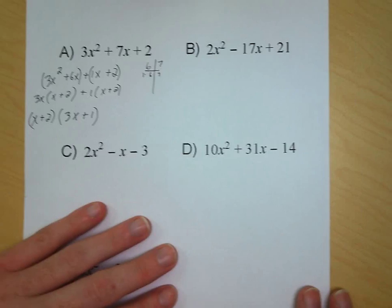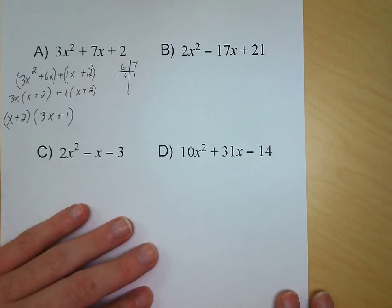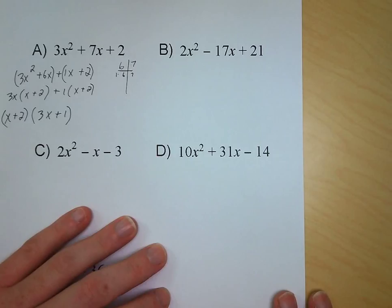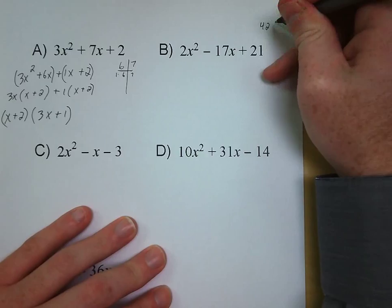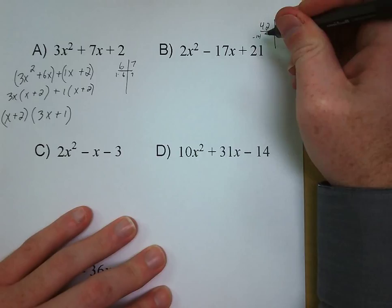Our second example: we have 2x squared minus 17x plus 21. We're looking for factors of 42 that are going to add up to negative 17. Since we've done this one already, I know that our factors are going to be negative 14 and negative 3, because negative 14 plus negative 3 gives us negative 17.